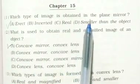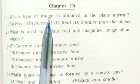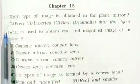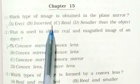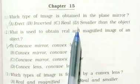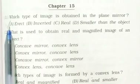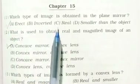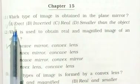Chapter 15, Question 1: Which type of image is obtained in the plane mirror? Options: A) erect, B) inverted, C) real, D) smaller than the object. The right answer is A) erect.